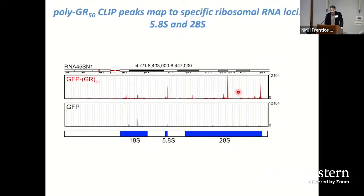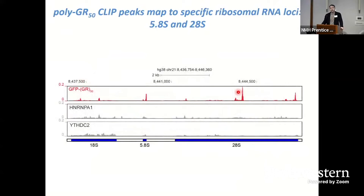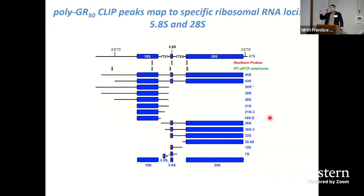Reviewers were concerned that ribosomal RNA is highly abundant and all kinds of RNA binding proteins could pull it down. So as an additional control, we used publicly available CLIP-seq datasets from other RNA binding proteins known to interact with ribosomes. The specific peak we identified with GR50 corresponding to 28S is completely absent from other publicly available datasets — it is highly enriched in our dataset relative to controls and not found in others.